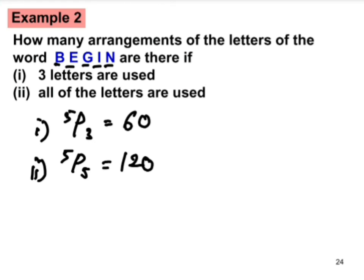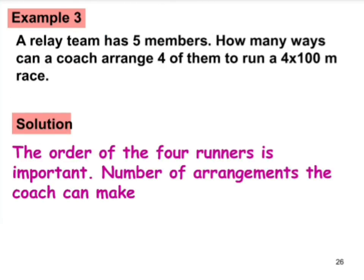Example three: A relay team has five members. How many ways can a coach arrange four of them to run a 4×100 meter race? The order of the four runners is important, so this is a permutation. The number of arrangements is 5P4 = 120.